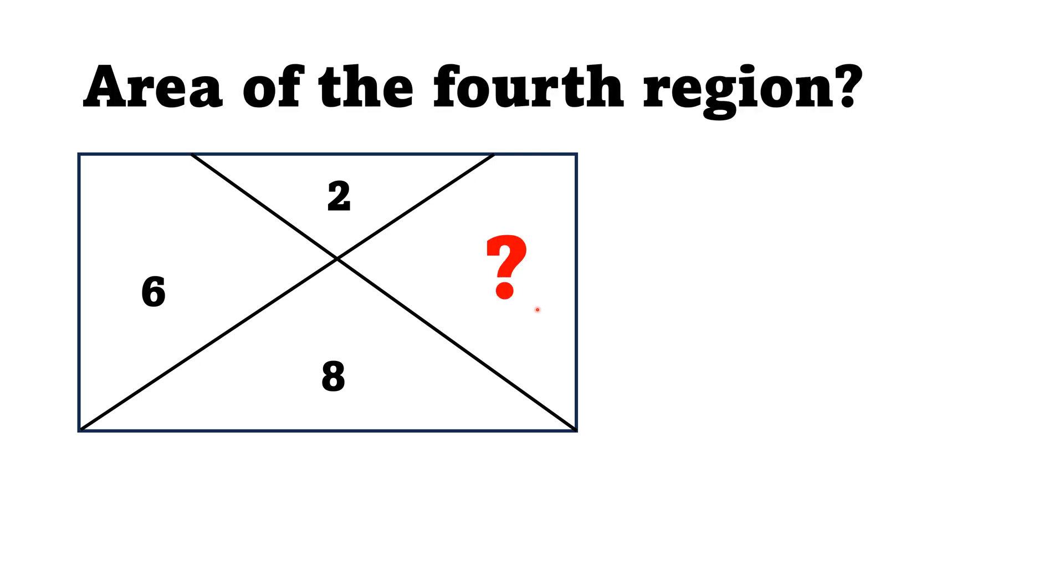Hello everyone, in this video, given is a rectangle. Two lines are drawn in this rectangle from two vertices which divide this rectangle into four portions. The first portion has area 2 square units, second portion has 6 square units, third portion has 8 square units, and we have to find the area of this fourth portion from this given data.